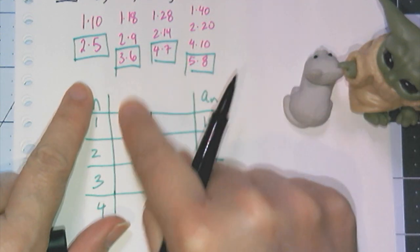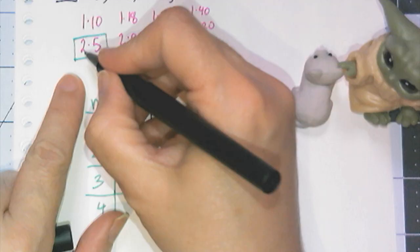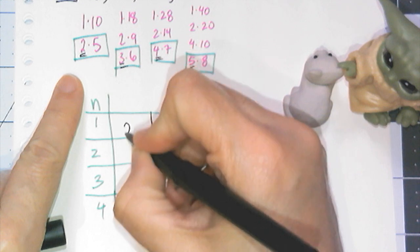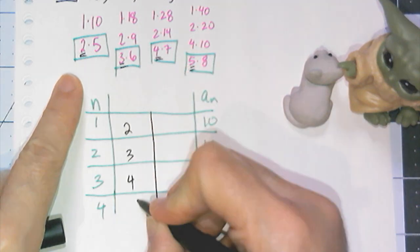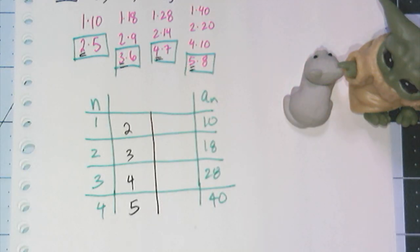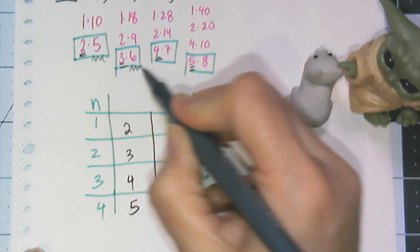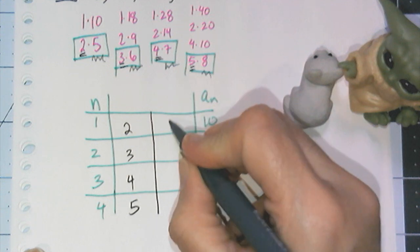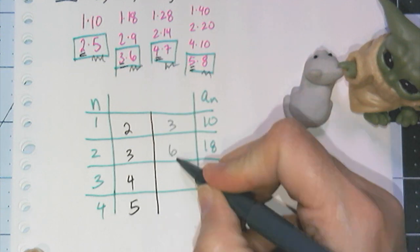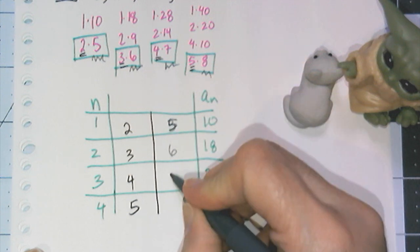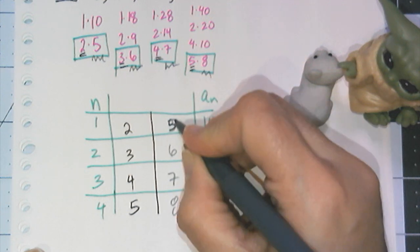So now I'm going to split this into two pieces. Now one half is going to have the first number in each of these arrangements. So 2, 3, 4, 5. And the other column is going to have this other number here. So 5, 6, 7, 8.